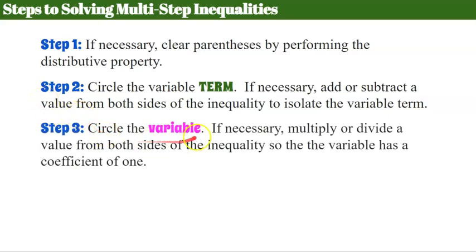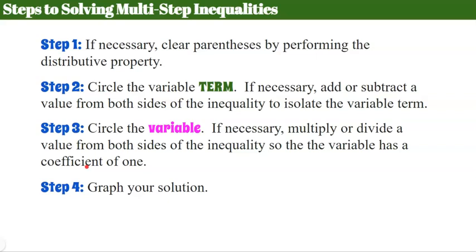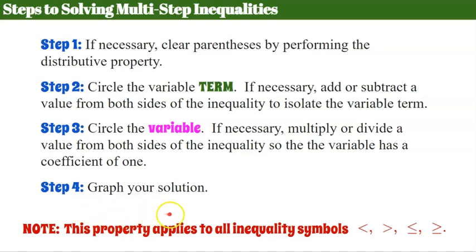Step three: circle the variable. If all that's on the left or the right of the inequality symbol is the variable term, circle the variable. Then if necessary multiply or divide a value from both sides of the inequality so the variable has a coefficient of 1. We want to know what the variable is less than, greater than, less than or equal to, or greater than or equal to. Step four: graph your solution. These steps apply to all inequality symbols.